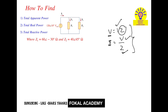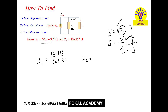According to Ohm's law, I1 equals voltage divided by Z1. The voltage is 120 at phase angle 10 degrees, and Z1 is 60 at phase angle minus 30 degrees, giving us the current I1. Similarly, I2 equals voltage across impedance Z2 — that is 120 at phase angle 10 — divided by Z2, which is 40 at phase angle 45 degrees.